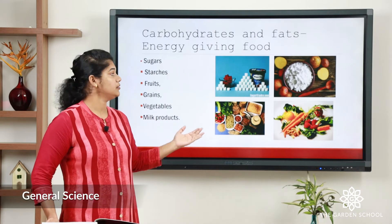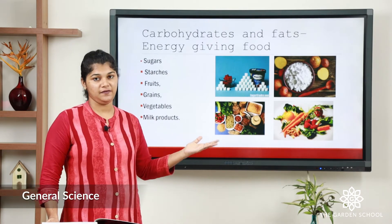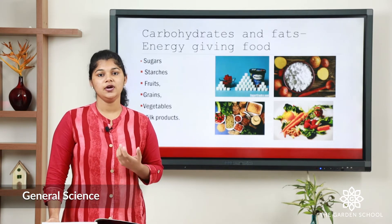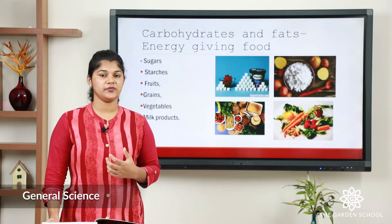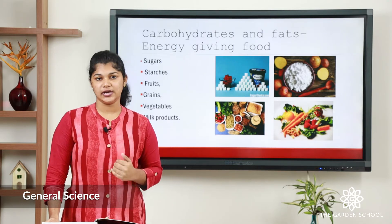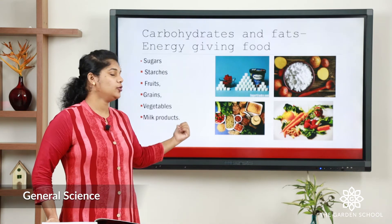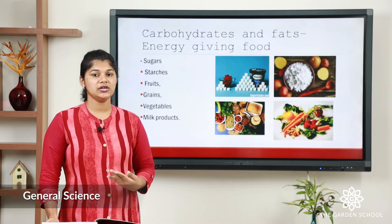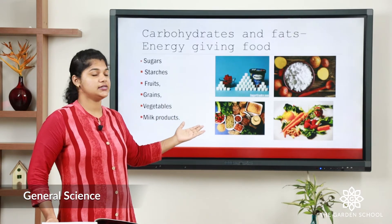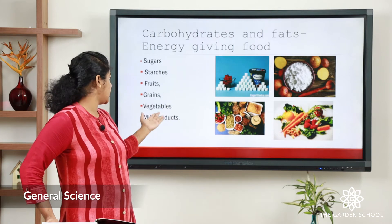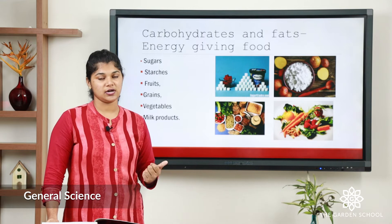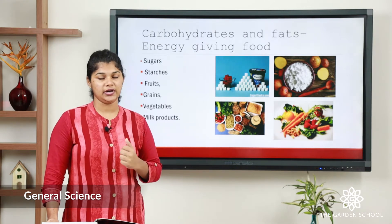The first nutrient is carbohydrates and fats. These nutrients are called energy-giving nutrients. Our body is working all the time — even when you sleep, your body needs energy to work. Carbohydrates are the foods which give energy to your body. Carbohydrates contain sugars, starches, fruits, grains, vegetables — all these foods contain carbohydrates.